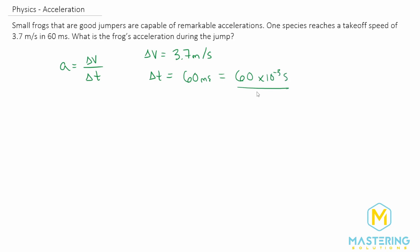And now we're in SI units, and we can just plug it into the formula. So now we can plug this into our formula, and we have 3.7 meters per second for the change in velocity over 60 times 10 to the negative 3 seconds for the change in time.